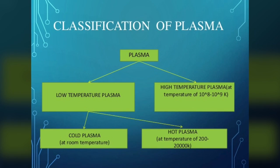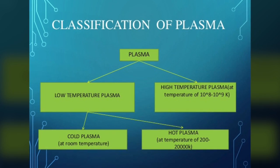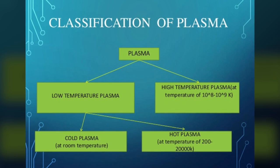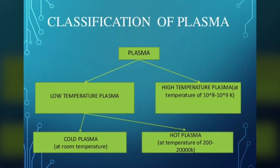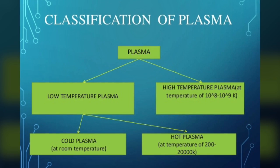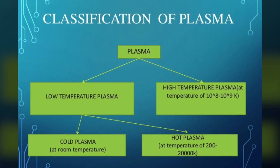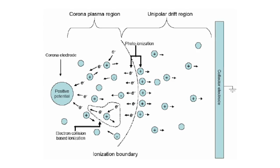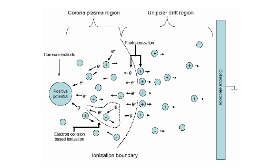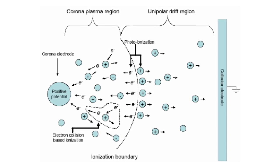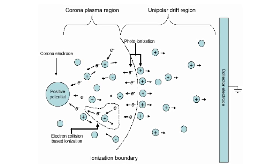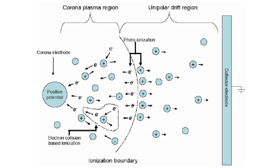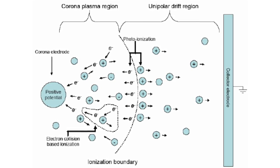A partially ionized plasma is often referred to as a cold plasma, and highly ionized plasma is referred to as hot. Discharge from a corona is predominantly a cold, dark current invisible to the eye.